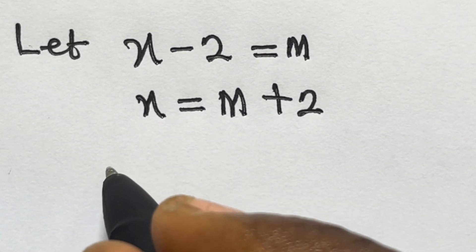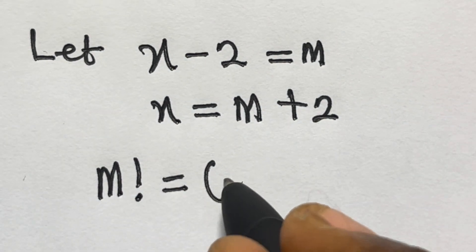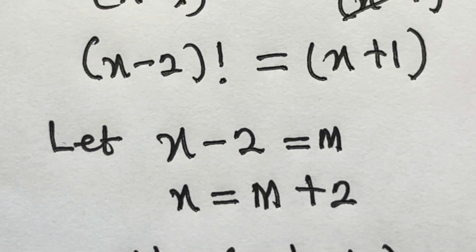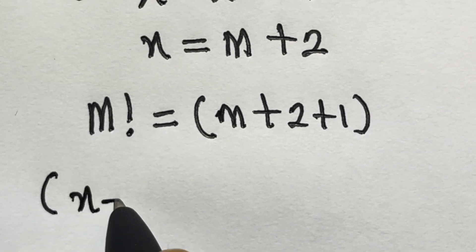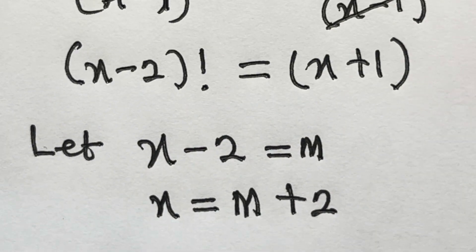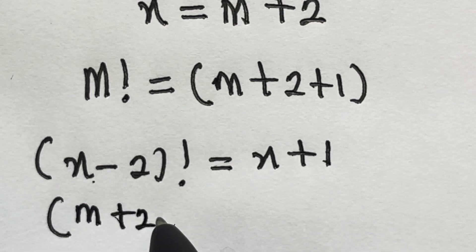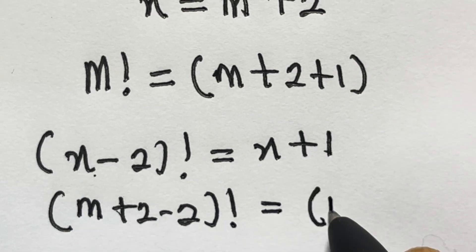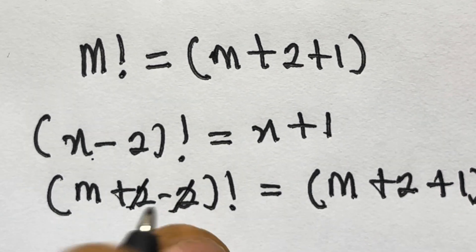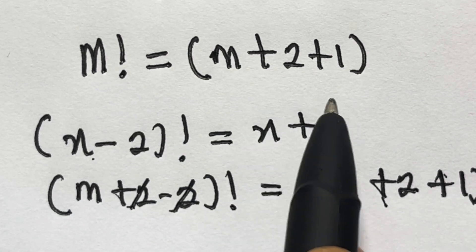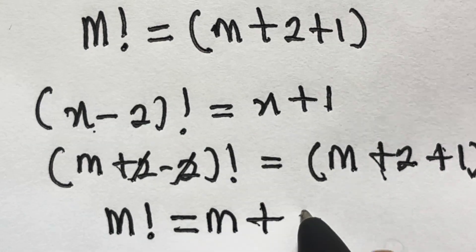So with x equals m plus 2, we substitute back: x minus 2 factorial becomes m factorial, and x plus 1 becomes m plus 2 plus 1, which equals m plus 3. So our equation becomes m factorial equals m plus 3.